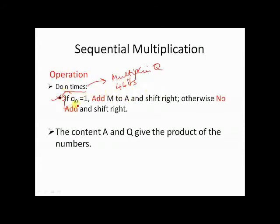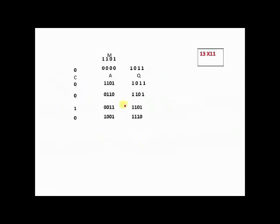After 4 cycles of full iteration, the content of A and Q is going to hold the product of the two numbers. Let's do a problem now. As an example, we have a multiplicand that is 13, which is M, and 11 which is held in register Q as the multiplier. So 13 is 1101 and 11 is 1011, and A will be initially 0000 with carry flag as 0. This is the initial configuration.